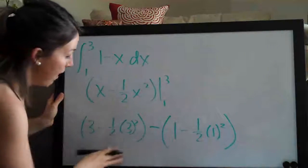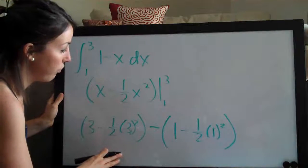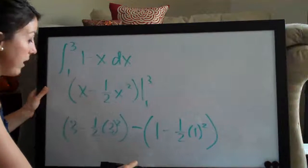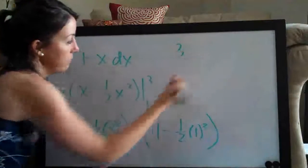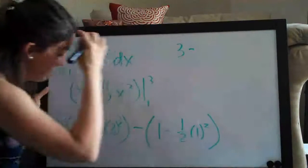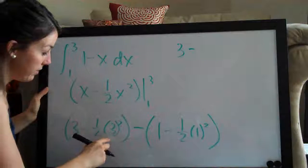And now that we've evaluated from 1 to 3, all we need to do is simplify. So I'm going to go ahead and simplify up here. So 3 minus... 3 squared is 9.